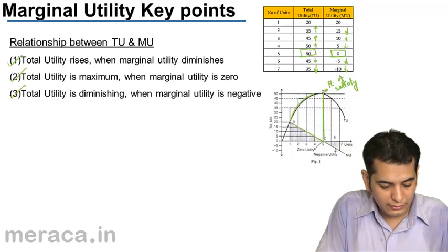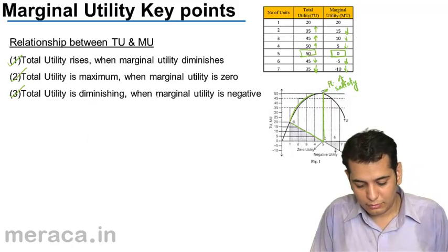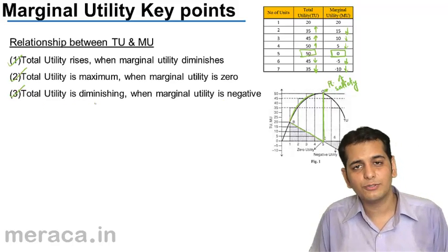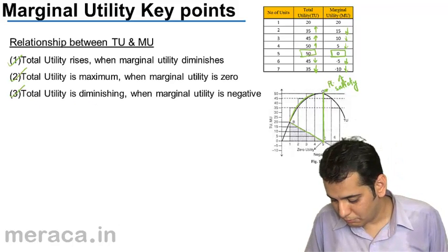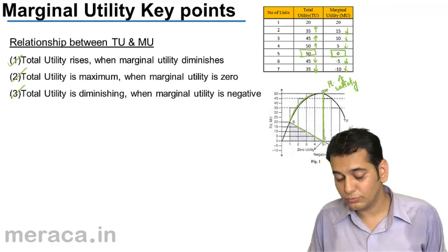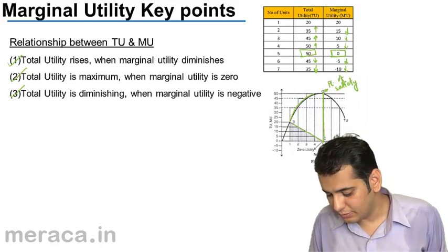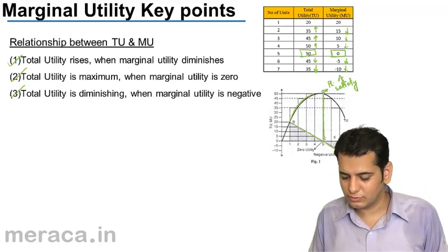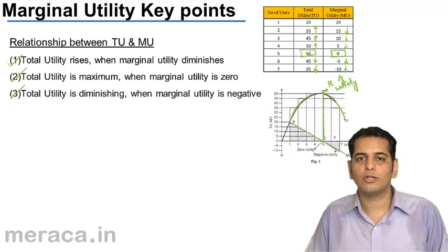And finally, when the marginal utility is negative, the total utility is diminishing. The marginal utility has gone below the x-axis, and now the total utility is falling.